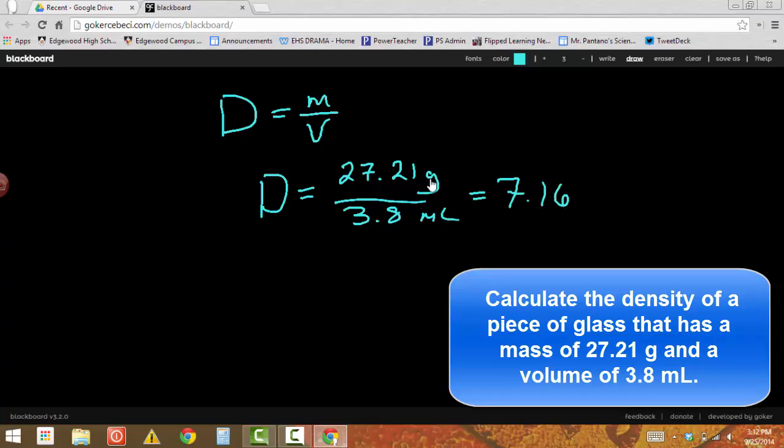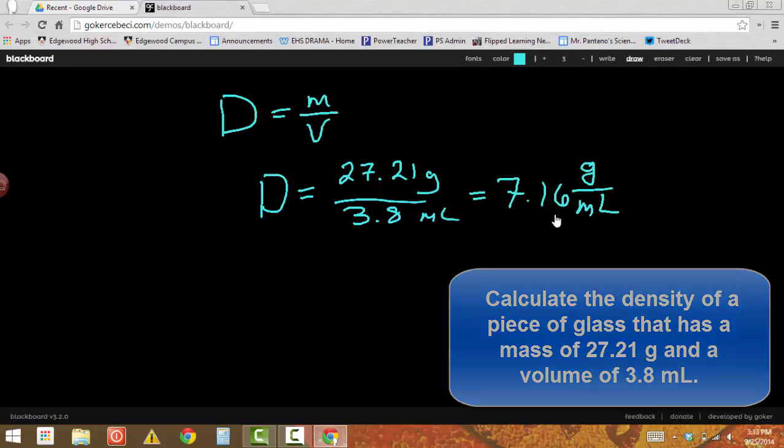Now the units, this is something that people have asked, what do I do about the units? Well, because I can't cancel any units here, I have to keep them both. And so my units are grams over milliliters, or the way we read this is grams per milliliter. What it means is that this glass, in this case, 7.16 grams of the stuff will have a volume of one milliliter. It's 7.16 grams for every one milliliter of stuff. So that's what density means.